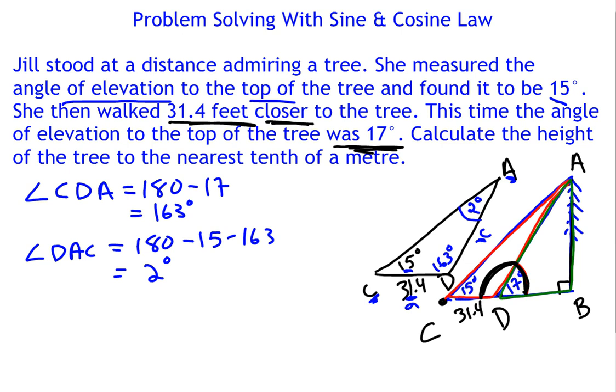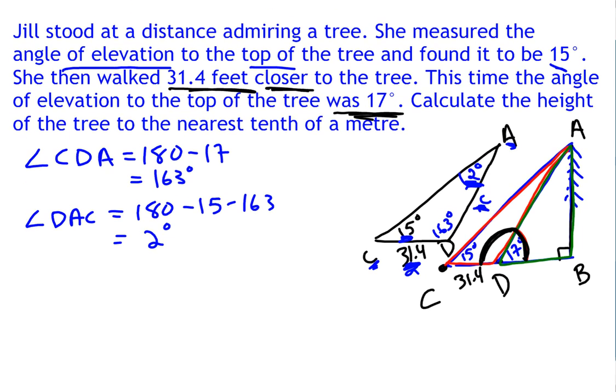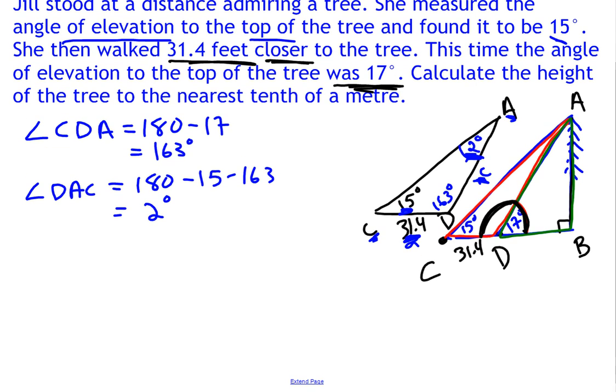We now have an angle, its corresponding side length. We have another angle and we're asked to find a corresponding side length. So this is a perfect candidate for using the sine law. So let's go ahead and set up the sine law. We have information about C, we're trying to find information about A. So I'm going to use this version of the sine law, C over sine C equals A over sine A. Using this one where we have the lengths on top and the angles on the bottom, because we're trying to find a side length, it's just a little bit easier.